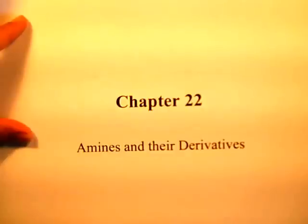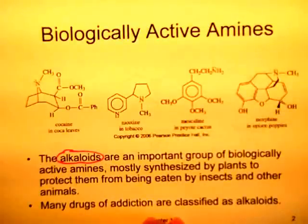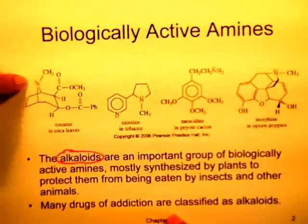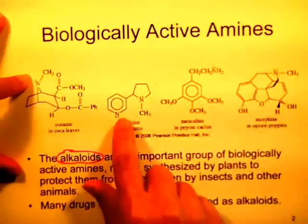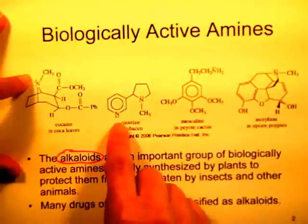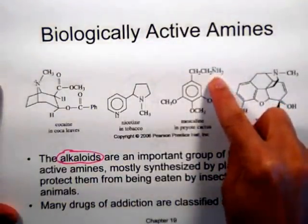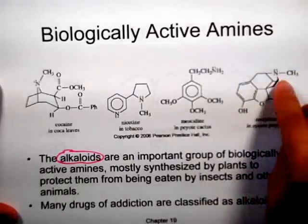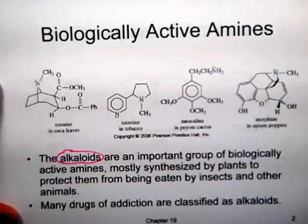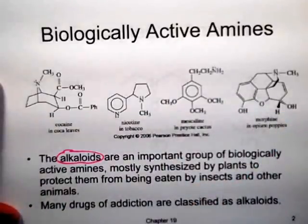Chapter 22 or chapter 23, depending on which book you're using, is going to talk about amines and the derivatives of the amines. Amines are very common compounds. I have four biologically active amines here. The first one on the left is cocaine — notice that it's a tertiary amine. Nicotine has two nitrogens, both of them are basic, and it's found in tobacco. This one is mescaline, and that nitrogen is attached to one carbon, so it's a primary amine. This one is morphine, found in opium poppies, and it's another tertiary amine. When you find an amine in nature, they also call them alkaloids, so all these compounds are classified as alkaloids because they're natural products.